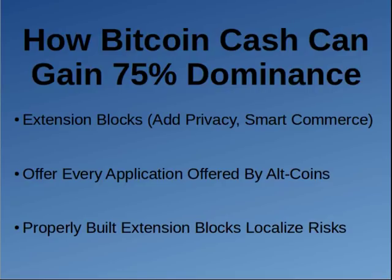Users are not putting the rest of the network at risk by using these protocols — they're only putting their own funds at risk. This would allow Bitcoin Cash to basically make every other coin on the market, including Ethereum and all the privacy coins, a moot point. Bitcoin Cash has already added CashShuffle, so what's the point of having Dash if Bitcoin Cash has a better mixing algorithm and does it for free?